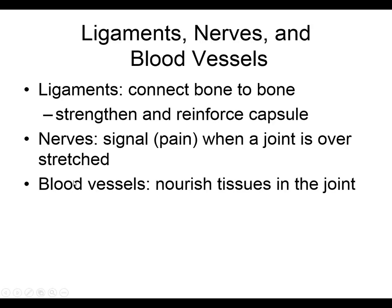Synovial joints have nerve supply — when a joint is injured or when someone has arthritis, they feel pain. We also need proprioception — the deep sensation of position — so the cerebellum and brain can receive information about joint position and correct it if needed. The joint is also supplied by blood vessels that nourish the tissues in the joint, like the capsule.